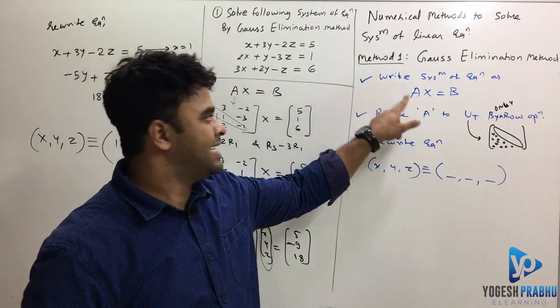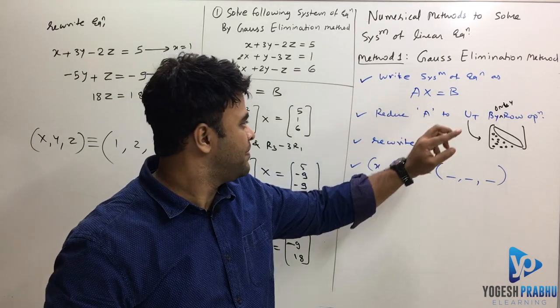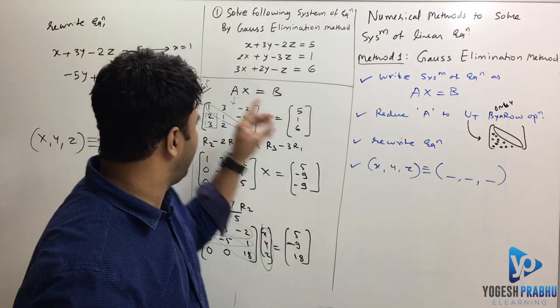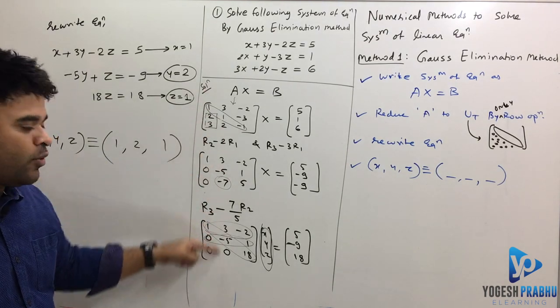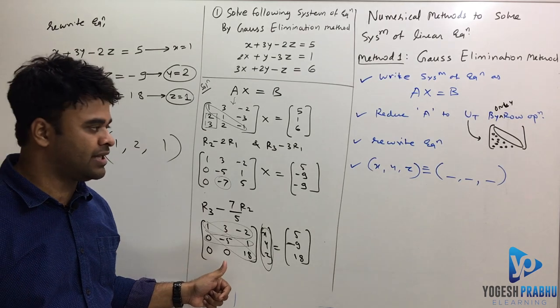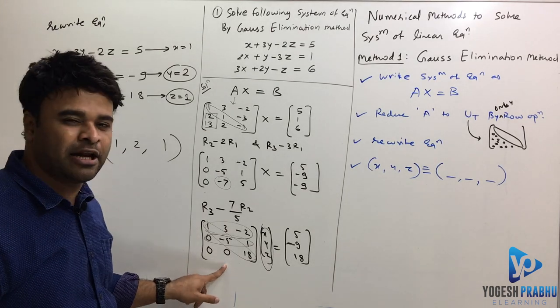First, you will do is write this as Ax equals b form. Then reduce matrix A over here to upper triangular matrix. And while you do that, only do the row operations. No column operations allowed. This form is called as echelon form.